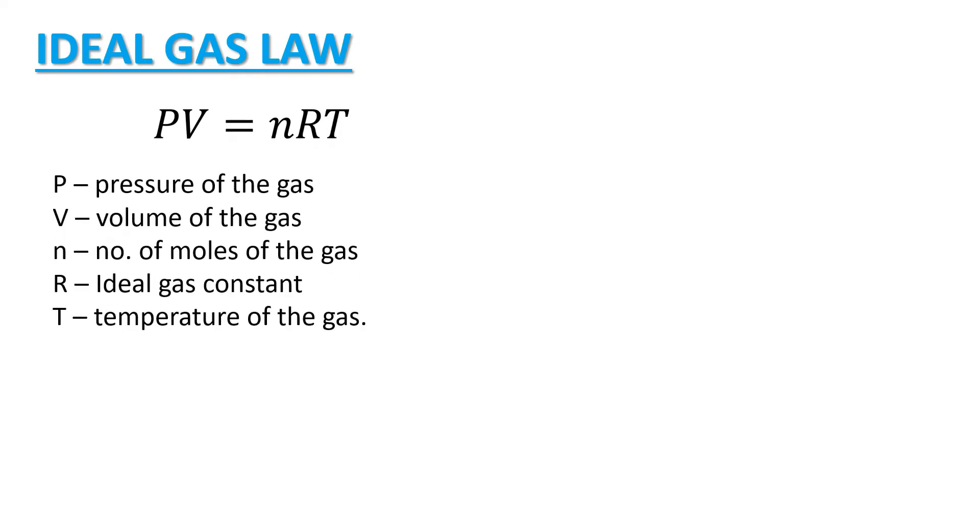The formula of our Ideal Gas Law or the Ideal Gas Equation is PV equals nRT where P is the pressure of the gas, V is the volume of the gas, small n is for the number of moles of the gas, T is for the temperature of the gas and our R here is the Ideal Gas Constant.